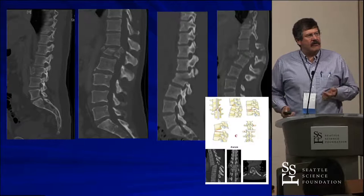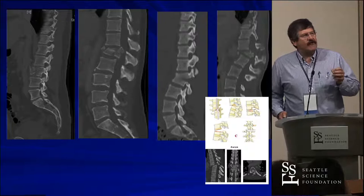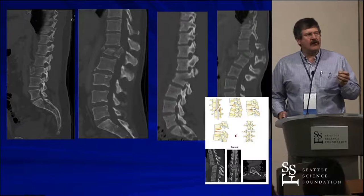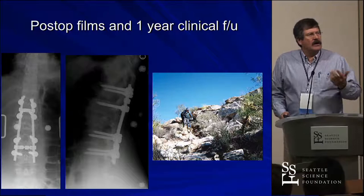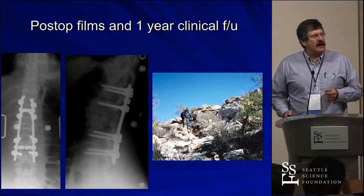Our last injury is a C fracture — you can see there's rotation and translation. Anteriorly we can grade the anterior injury. It's a C group with probably an A4 injury — burst involving superior and inferior end plate. This is a girl we treated all posteriorly, and you can see her riding her mountain bike a year out.